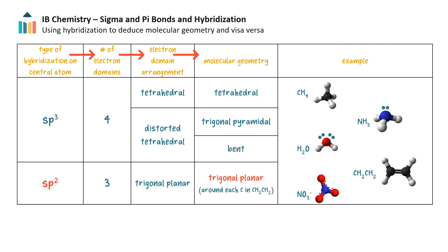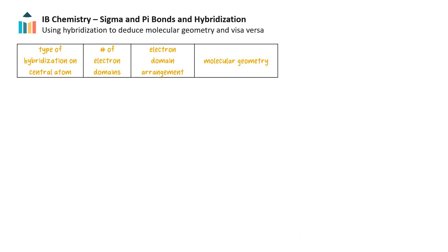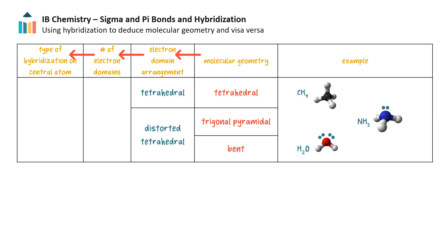Sp2 hybridization forms trigonal planar arrangements. And sp hybridization results in linear structures. We can work backwards too. If we know the molecular shape and number and types of electron domains, we can deduce the type of hybridization. Although methane, ammonia, and water have different molecular shapes, they all have four electron domains, and so their central atoms must all be sp3 hybridized.